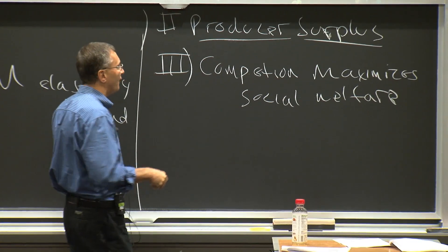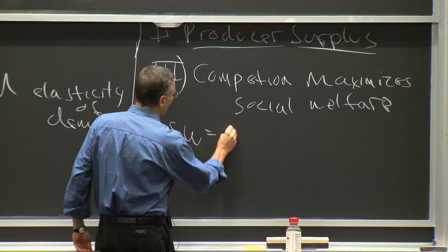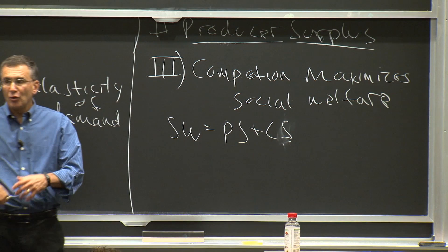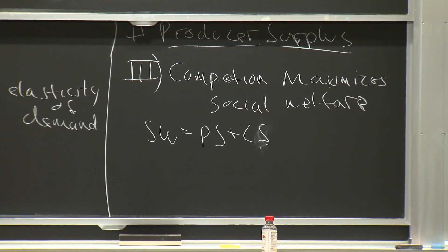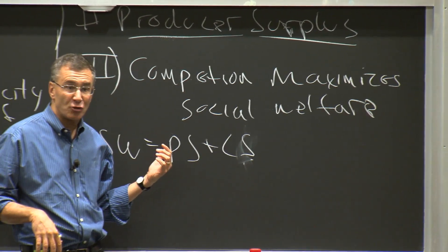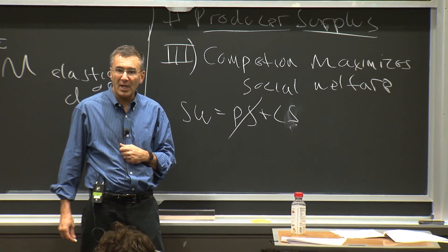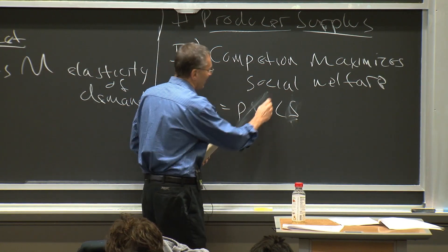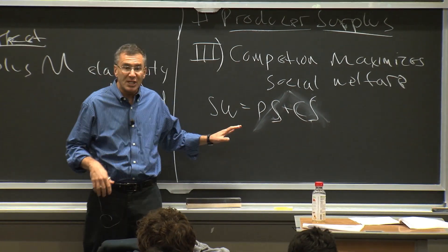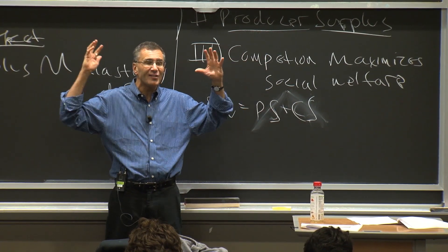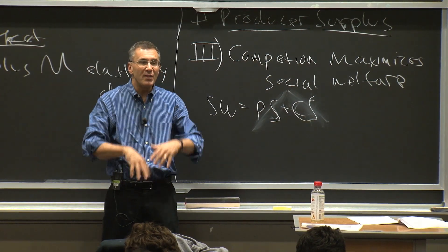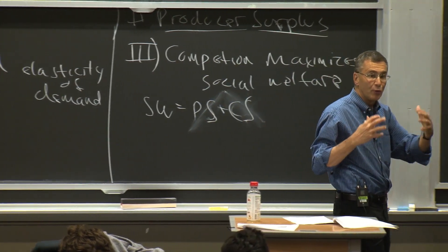What is social welfare? Social welfare is the sum of producer surplus plus consumer surplus — the surplus earned by producers plus the surplus earned by consumers. You might say this is a silly measure. Whether you're on one political side or another, that's how it's defined for now. We'll come back later to different weights on these two parts, but for now we're just going to add them up. This is the size of the pie — we're trying to make it as big as possible.